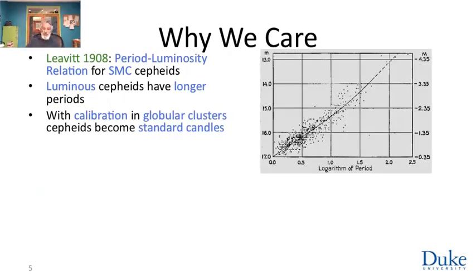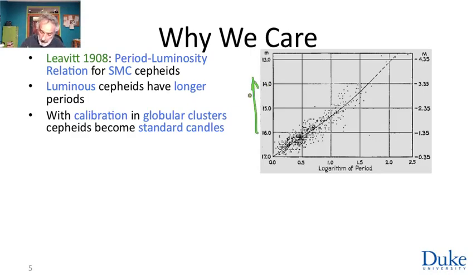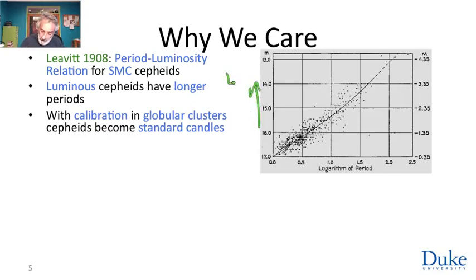The reason we care is a discovery by American astronomer Henrietta Leavitt in 1908 — this is actually her data. This is a plot of magnitude (a logarithmic version of luminosity) versus the logarithm of the period. The periods of Cepheid variables range from about a day to 50, 60, or 90 days. What she noticed is that the longer-period variables were the more luminous ones.